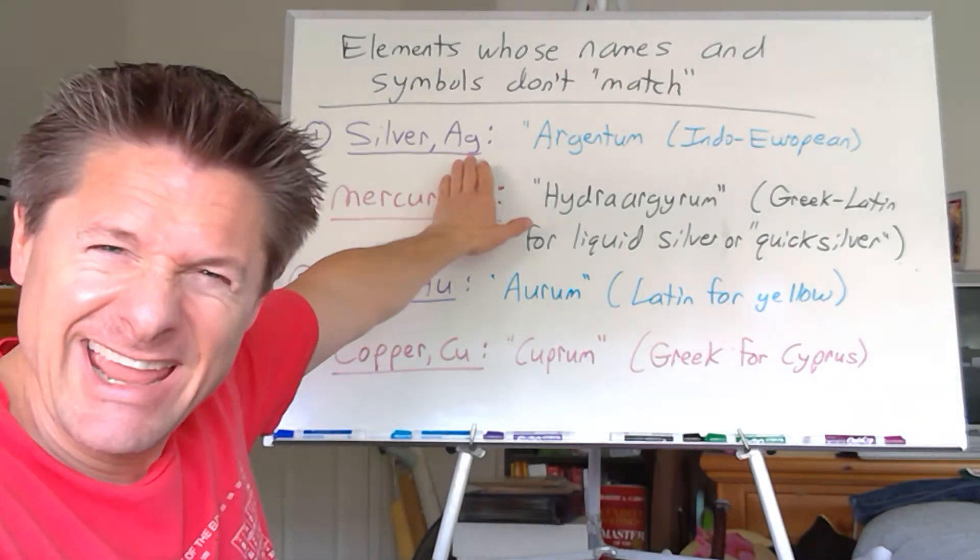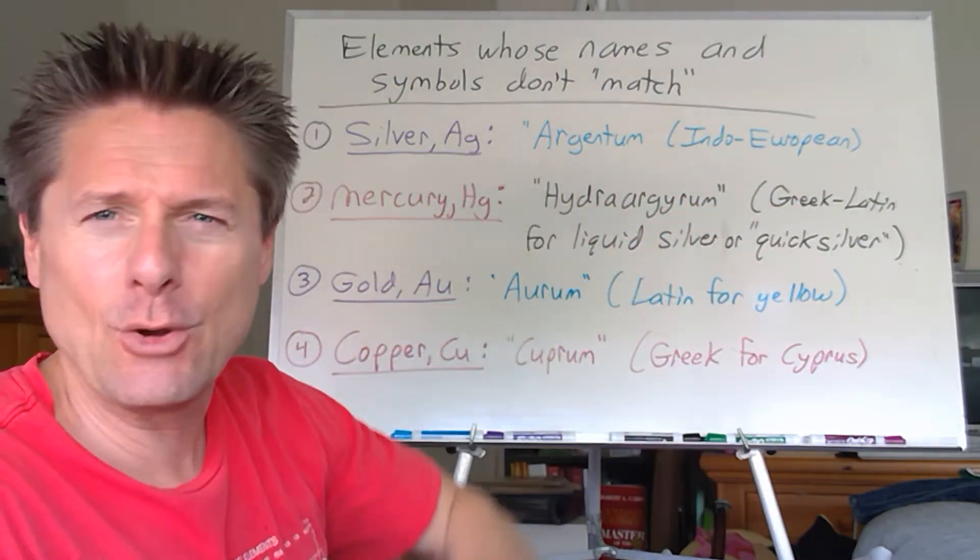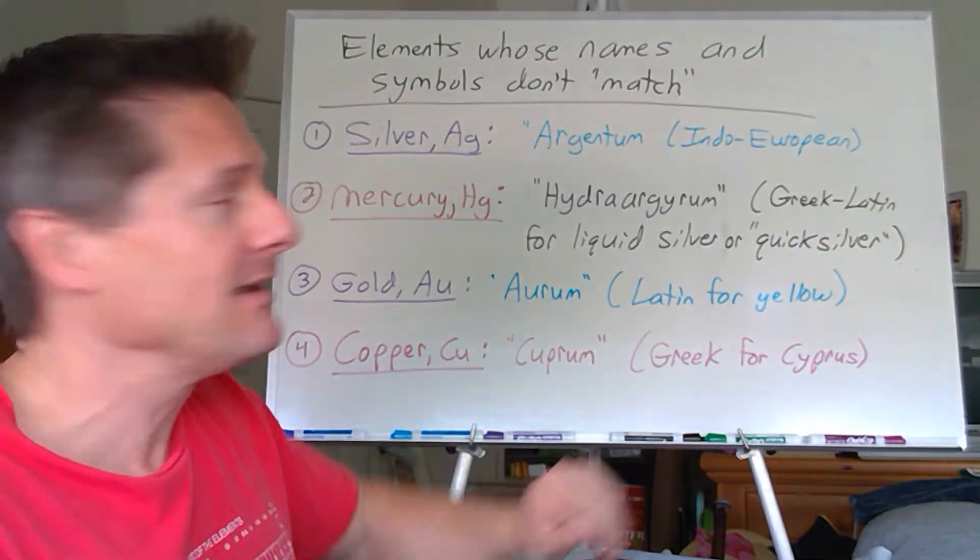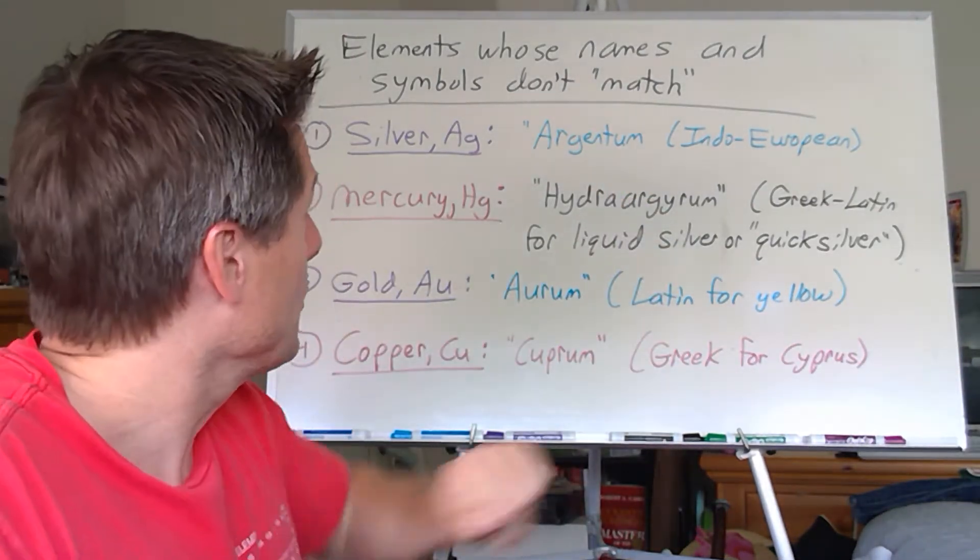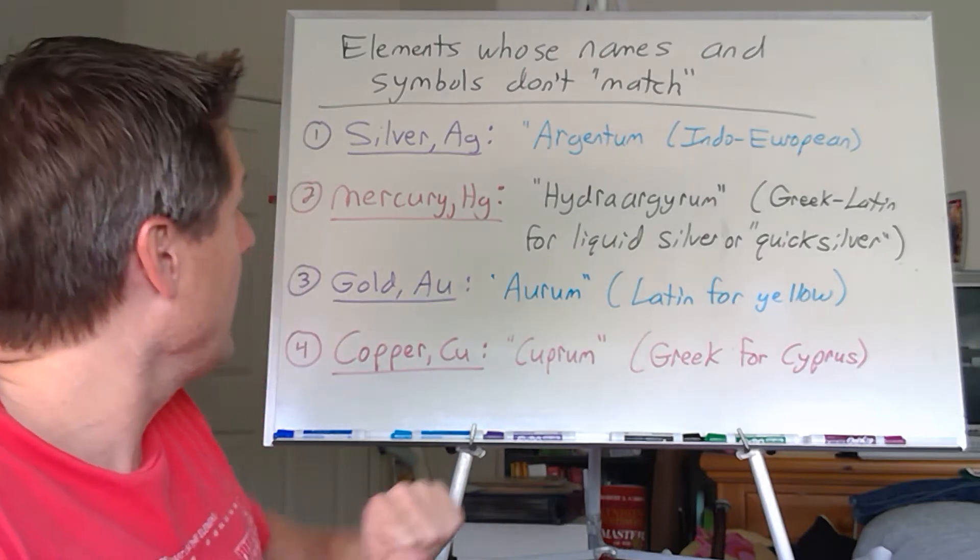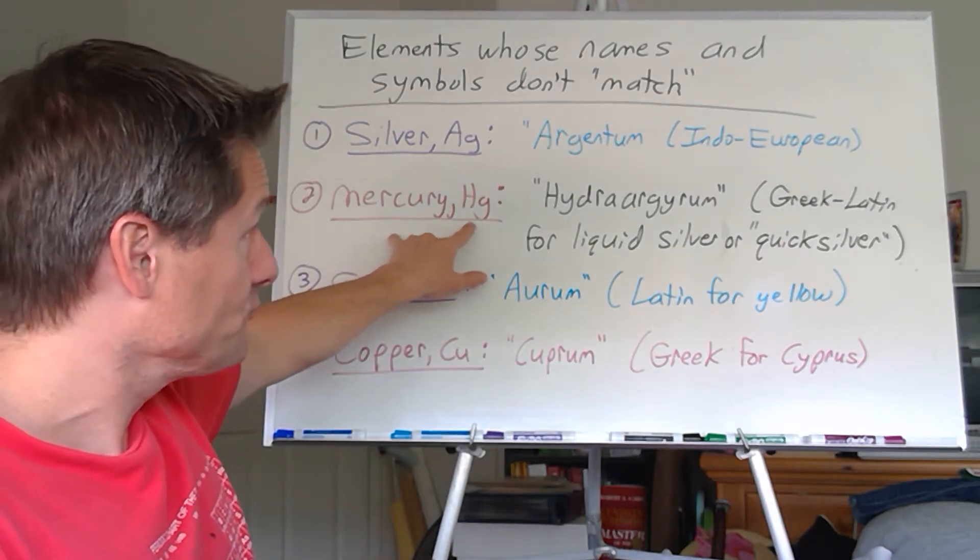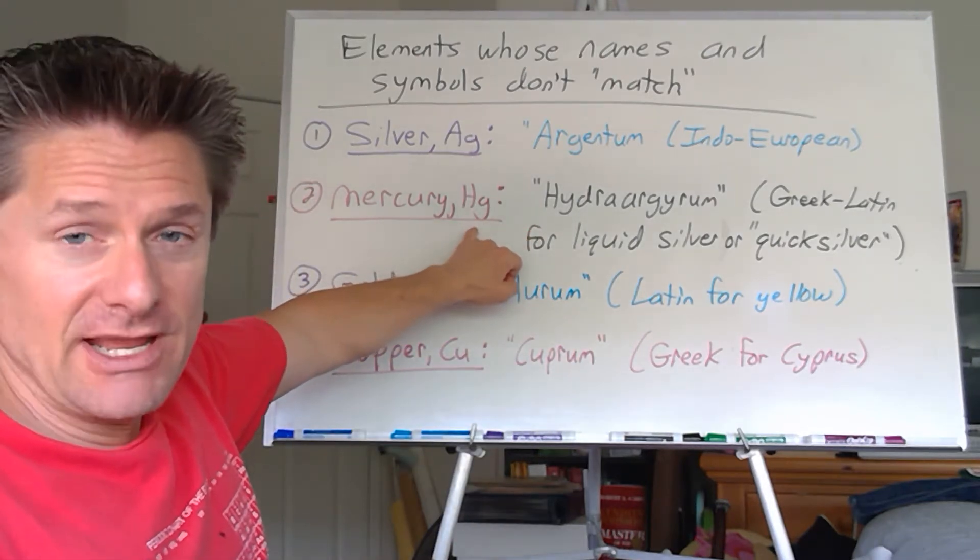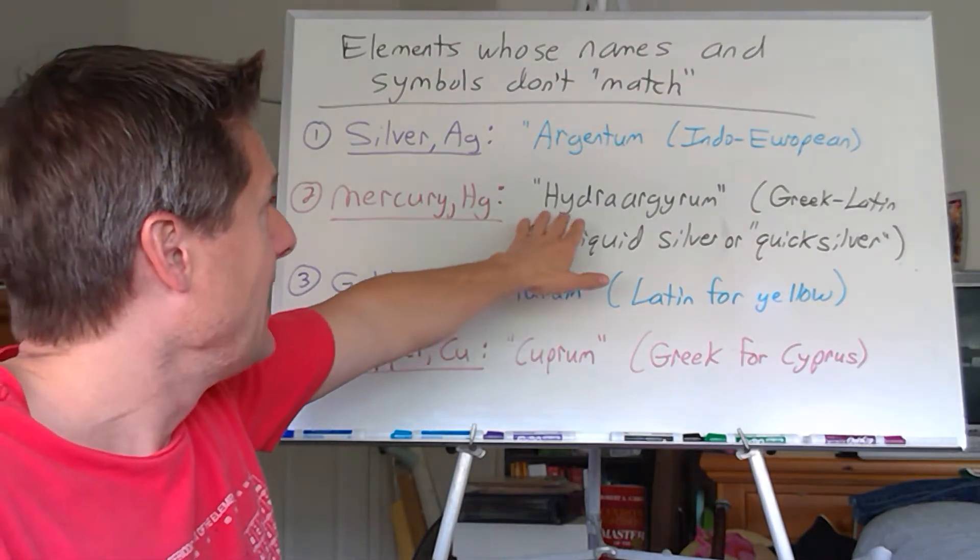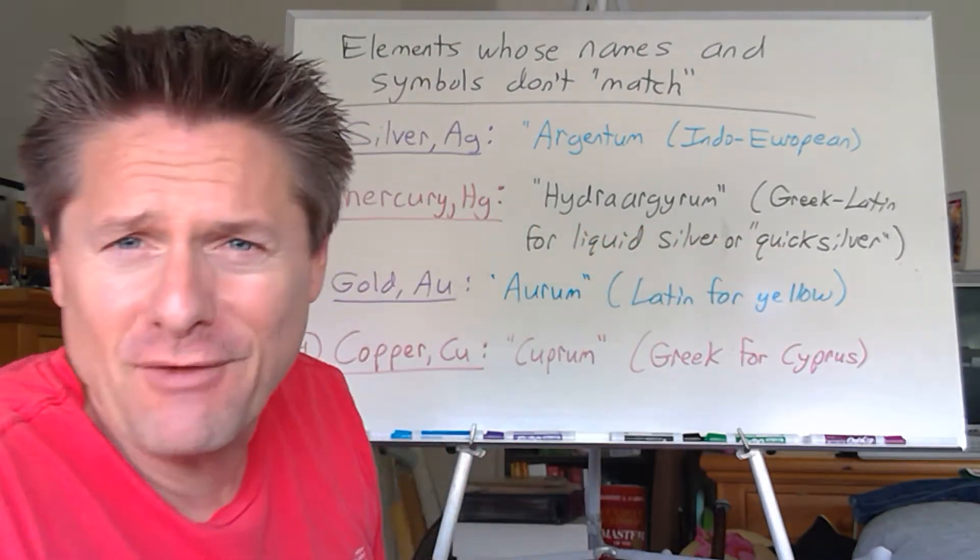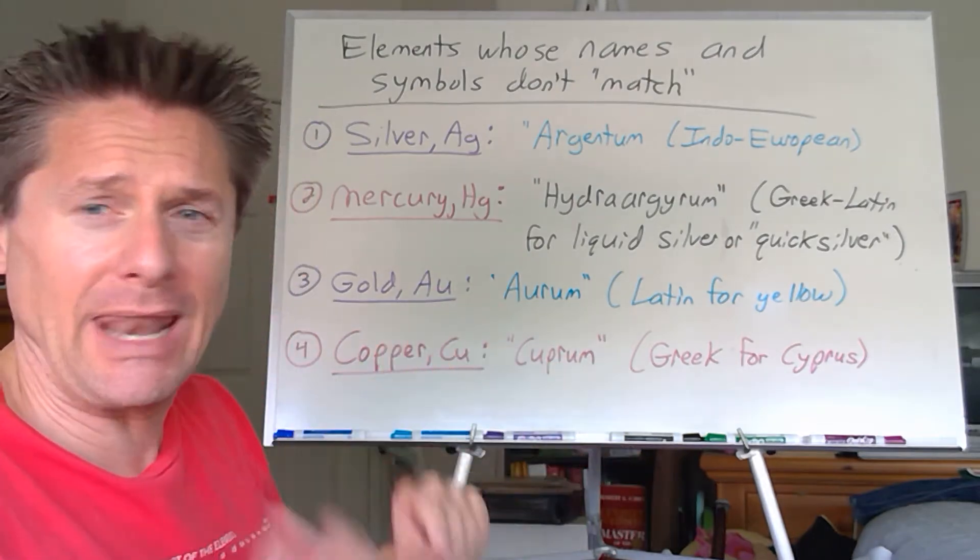So you get silver, gold, and copper—a lot of these coinage metals. So silver has a symbol Ag. Well, that doesn't make any sense. Well, it comes from a kind of an Indo-European blend, argentum, right? So you can see where the Ag comes from there.